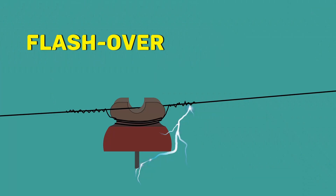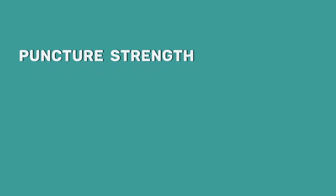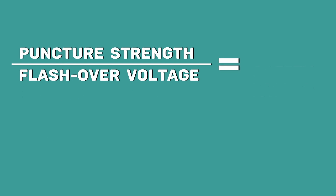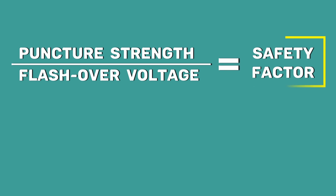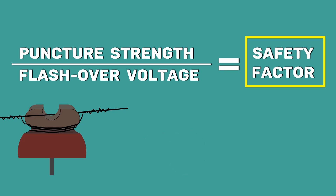Therefore, when the insulator breaks down by puncture, it is permanently damaged and cannot be used anymore — it must be replaced with a new one. But the insulator is not damaged by a flashover. To avoid a puncture, a sufficient thickness of porcelain is provided in the insulator. The ratio of puncture strength to the flashover voltage is known as the safety factor. The value of the safety factor should be high so that flashover takes place before the insulator gets punctured. For pin type insulators, the value of the safety factor is about 10.